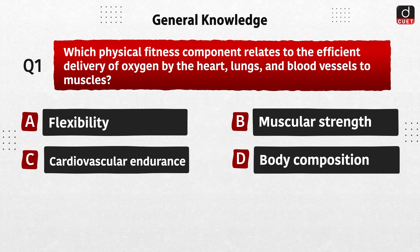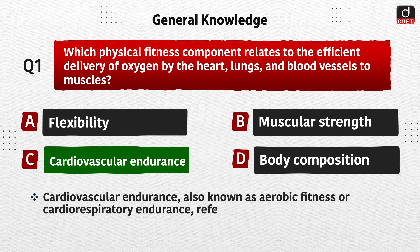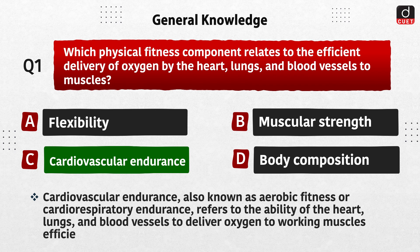The correct answer is option C, cardiovascular endurance. Cardiovascular endurance, also known as aerobic fitness or cardiorespiratory endurance, refers to the ability of the heart, lungs and blood vessels to deliver oxygen to working muscles efficiently during prolonged physical activity.